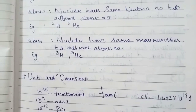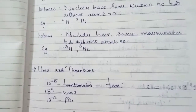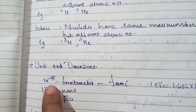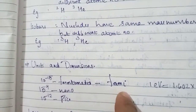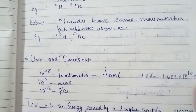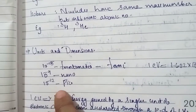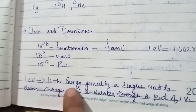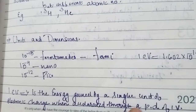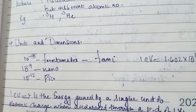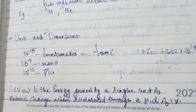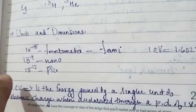Next we are going to units and dimensions. In this reference book, the units discussed include: 10 raised to minus 15 is a femtometer, that is Fermi. 1 electron volt equals 1.602 times 10 raised to minus 19 joules. 10 raised to minus 9 is nano, and 10 raised to minus 12 is pico. 1 electron volt is the energy gained by a single unit of electronic charge when accelerated through a potential difference of 1 volt — that is, the energy gained by that electron is called 1 electron volt.